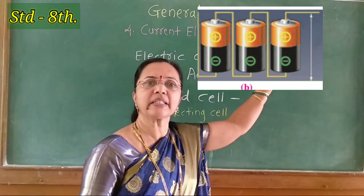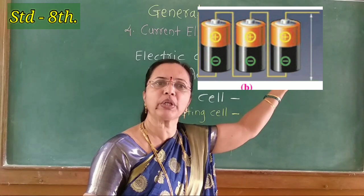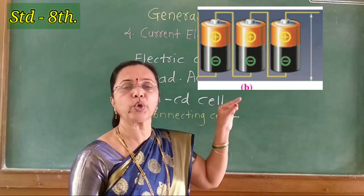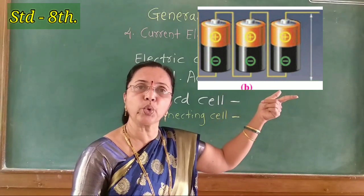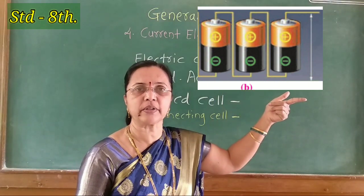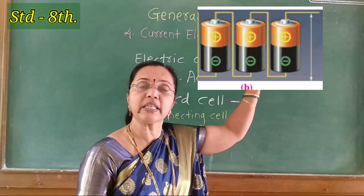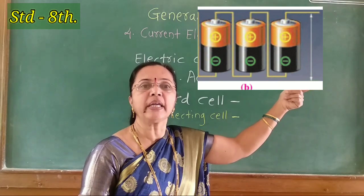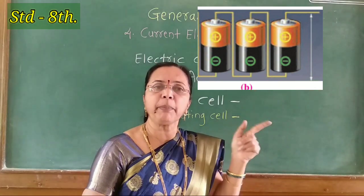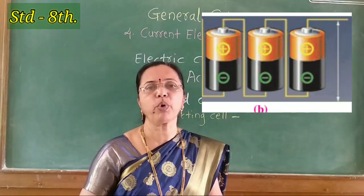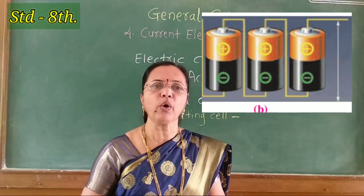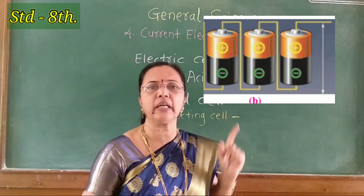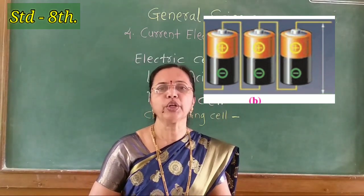The positive terminal of the first cell is connected to the negative terminal of the second cell, and the positive terminal of the second cell is connected to the negative terminal of the third one. Therefore, if each cell has a potential difference of one volt, the total potential difference of three cells connected in series is three volts.